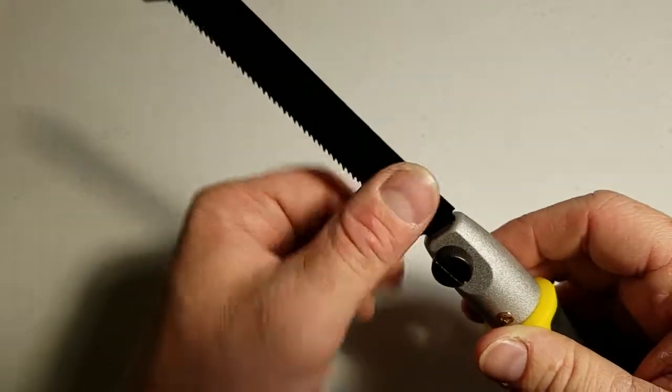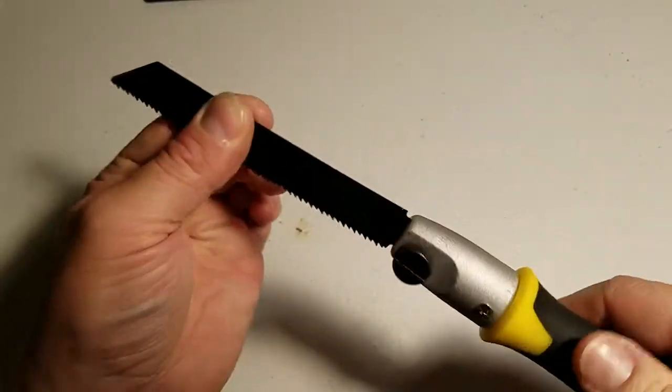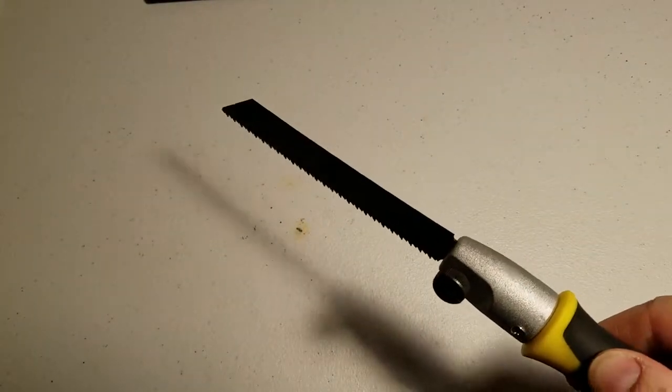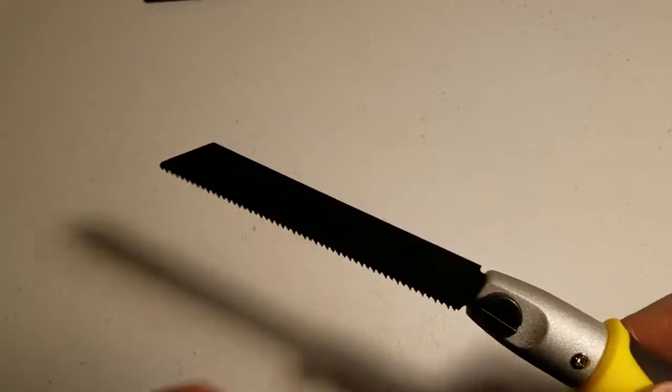It goes all the way down. This turns and it's in there securely. It's not coming out. And I can saw or I can flip it the other direction and then saw upwards if it was weird for me to get into where I'm getting into.